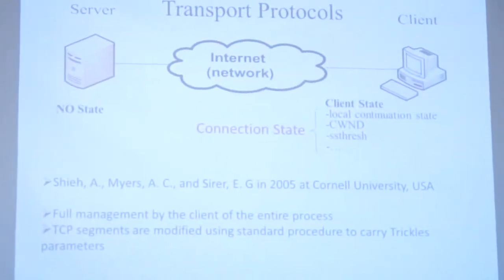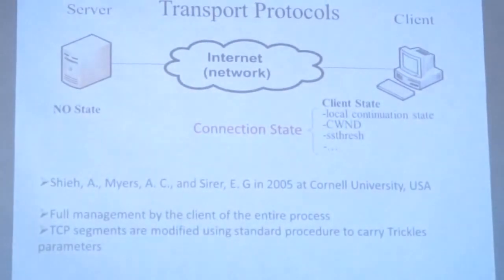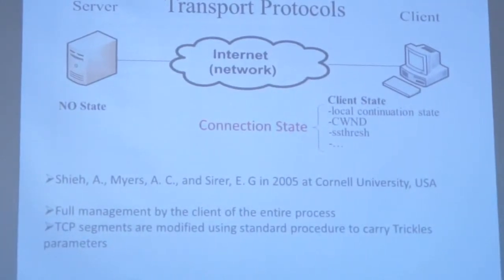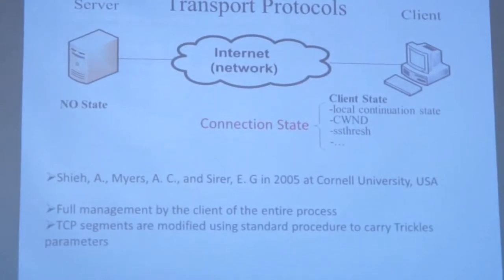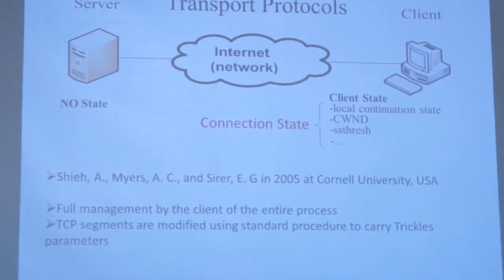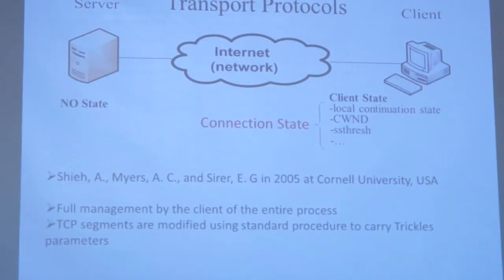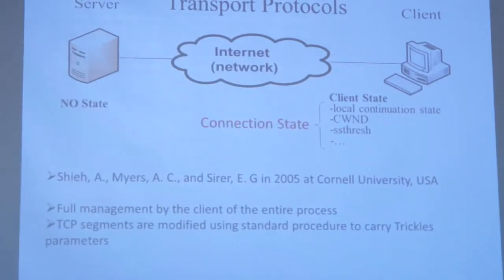Having all those problems of the TCP protocol, there were several attempts to create a stateless transfer protocol in networks. We selected the best development in this area, proposed by researchers at Cornell University in 2005. They proposed a protocol — the main idea being that all of the connection state information is pushed to the client, so the server doesn't have to remember anything, only forming simple calculations to keep the rate control of data transfer. The Trickles protocol uses TCP segments but with modifications.